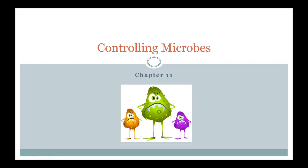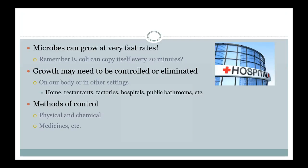In this chapter we're going to talk about controlling microbes. We talked about what microbes need in order to grow and reproduce, and now we want to make sure they don't get too out of control, especially in certain situations. E. coli bacteria could potentially copy itself every 20 minutes. If you started with 100 E. coli, 20 minutes later you could have 200, then 400, and after just a few hours it could multiply into the trillions. So we need to be able to control growth or even sometimes eliminate it.